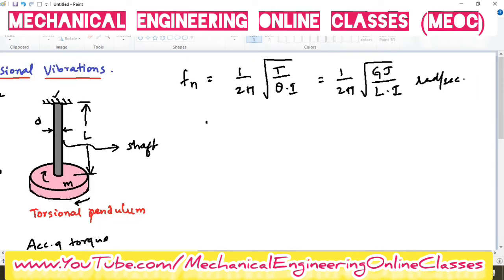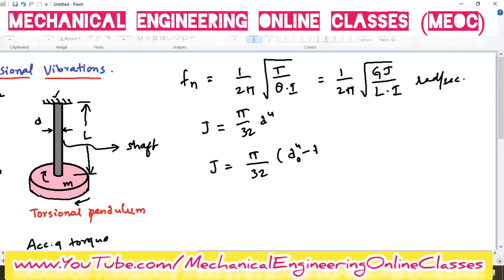If the shaft is a solid shaft, the polar moment of inertia J = (π/32)·D⁴. If the shaft is a hollow shaft, then J = (π/32)·(Do⁴ − Di⁴), where Do is the outer diameter and Di is the inner diameter of the shaft.